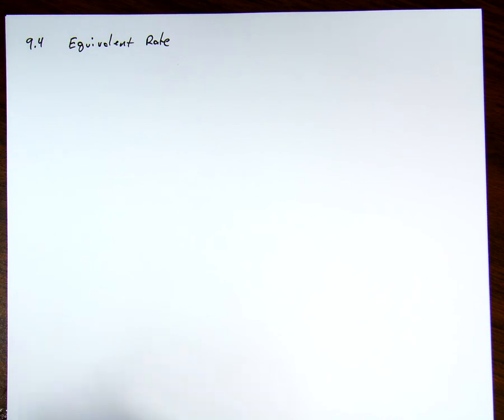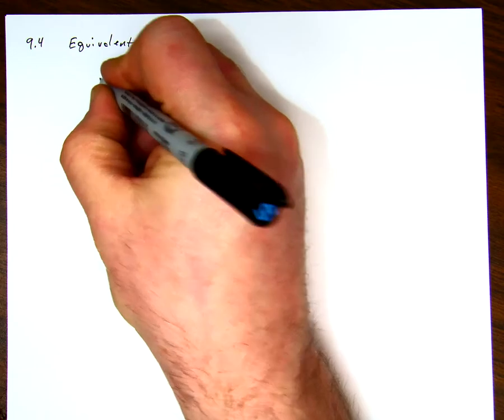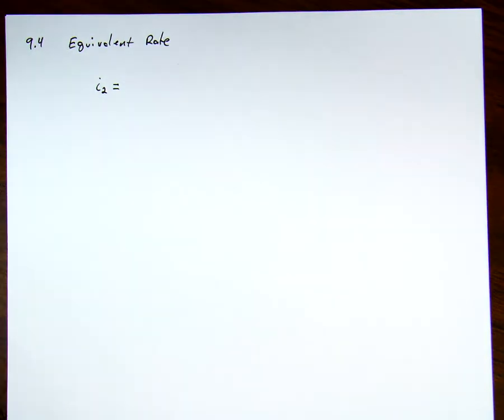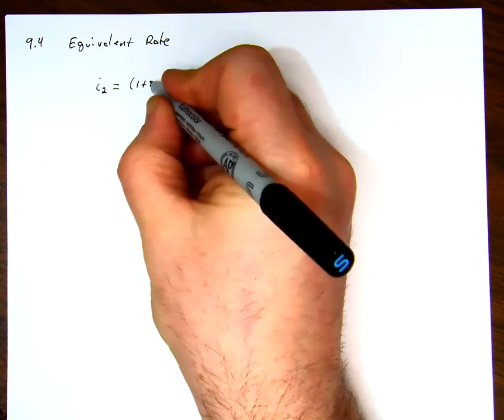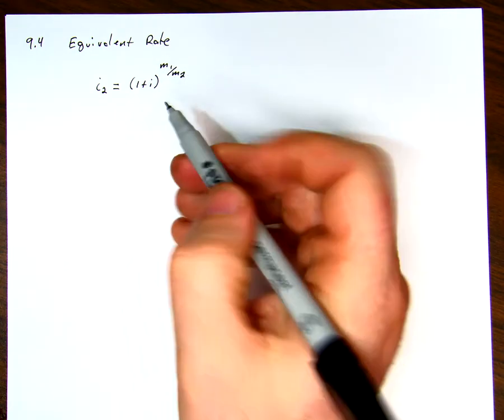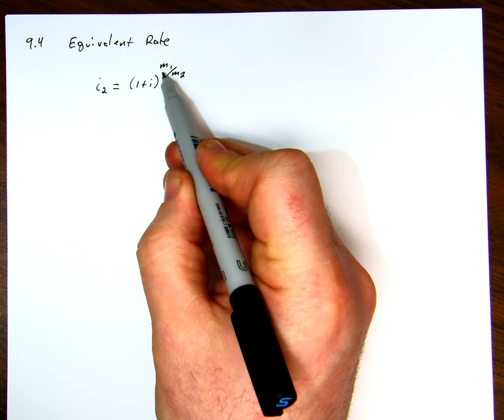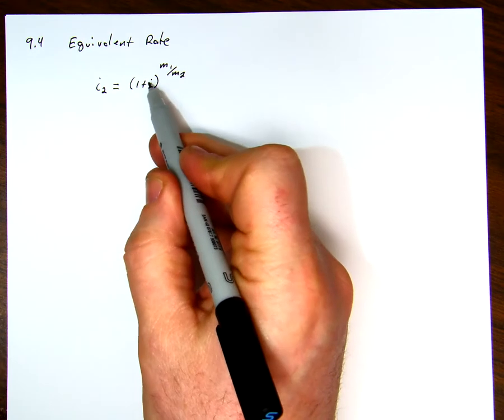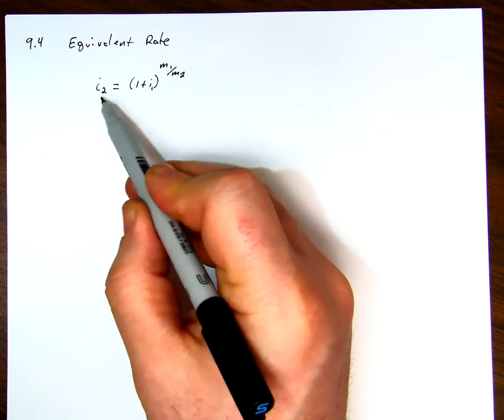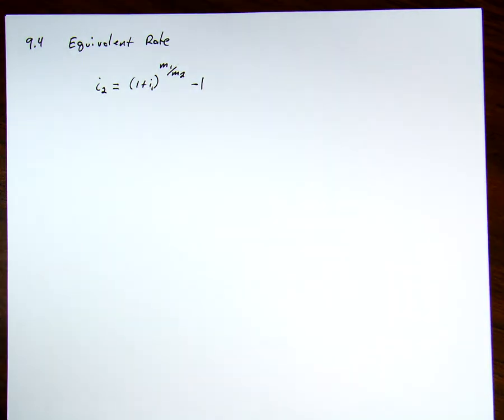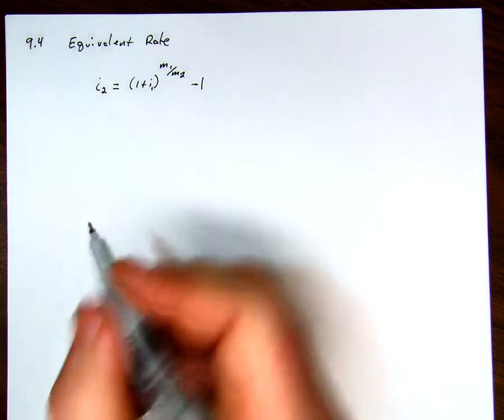We're converting from one compounding period to another. So we have a formula that says our resulting interest rate, the one in the new compounding rate, is equal to 1 plus i to the m1 over m2. And this is the compounding frequency compared to the original rate, and this is the compounding frequency compared to the new rate, minus 1.